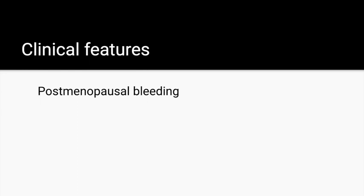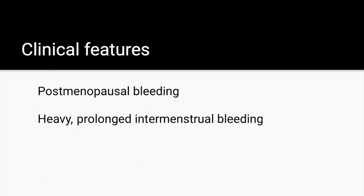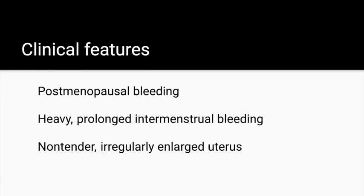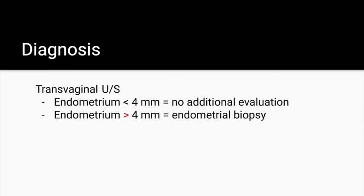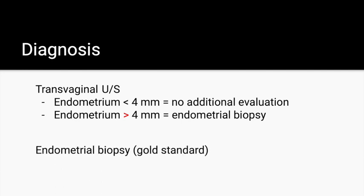Clinical features of endometrial cancer include postmenopausal bleeding, heavy prolonged intermenstrual bleeding, and a non-tender, irregularly enlarged uterus. These findings in a woman aged 55 to 65 should suggest endometrial cancer. A transvaginal ultrasound can detect increased endometrial thickness. If the endometrium is less than 4 mm, no additional evaluation is required. If greater than 4 mm, an endometrial biopsy is required.